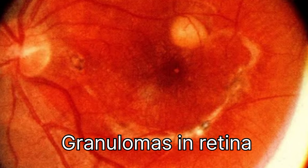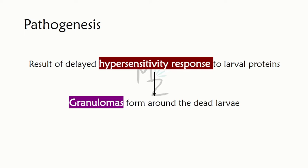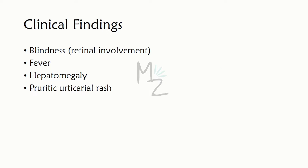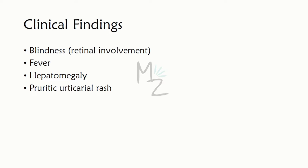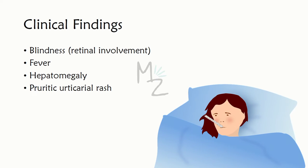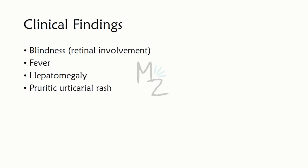Pathogenesis: pathology is related to granulomas that form around dead larvae as a result of a delayed hypersensitivity response to larval proteins. Clinical findings: the most serious is blindness associated with retinal involvement, but fever, hepatomegaly, and pruritic urticarial rash can also occur.